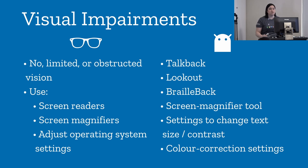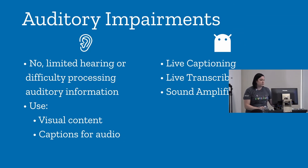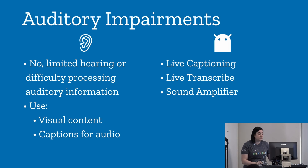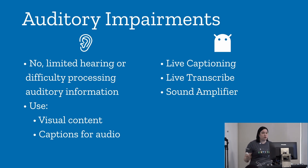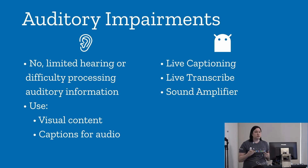Colorblindness isn't just red-green differentiation — there are actually three or four different kinds. Auditory impairments include no or limited hearing, or difficulty processing auditory information. Folks with these disabilities use visual content or captions for audio. Android provides live captioning for media, live transcribe for transcribing speech and sounds, and a sound amplifier to control different elements of sound in the environment.